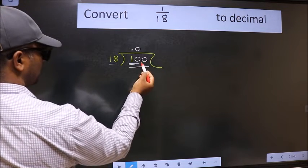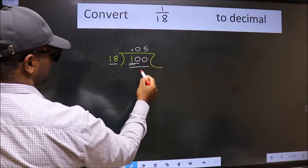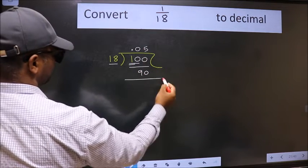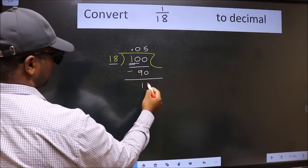Now, 100. A number close to 100 in the 18 table is 18 times 5, 90. Now, we should subtract. We get 10.